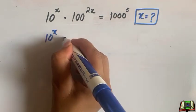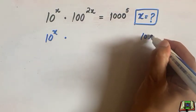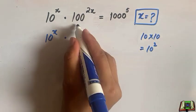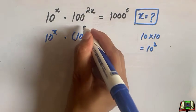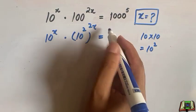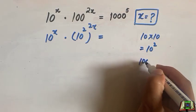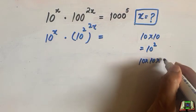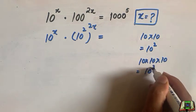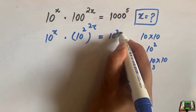10 to the power x as it is, we are going to change 100. We can write 100 as 10 times 10 which is equal to 10 to the power 2. So 100 is the same as 10 to the power 2 whole power 2x is equal to, we can write 1000 as 10 times 10 times 10 which is equal to 10 to the power 3. So replacing 1000 by 10 to the power 3 whole power 5.